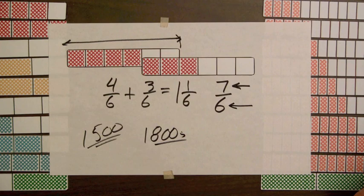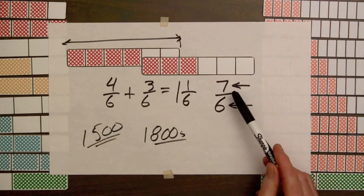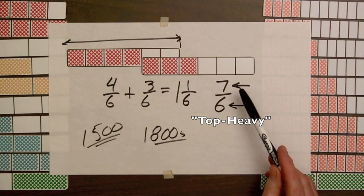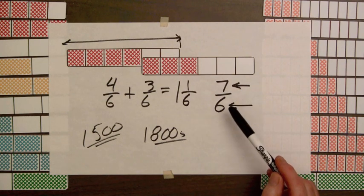Like many new ideas, there was initial resistance to the idea of improper fractions. In England, such fractions are called top-heavy, a term that might help students connect to the meaning of improper fractions.